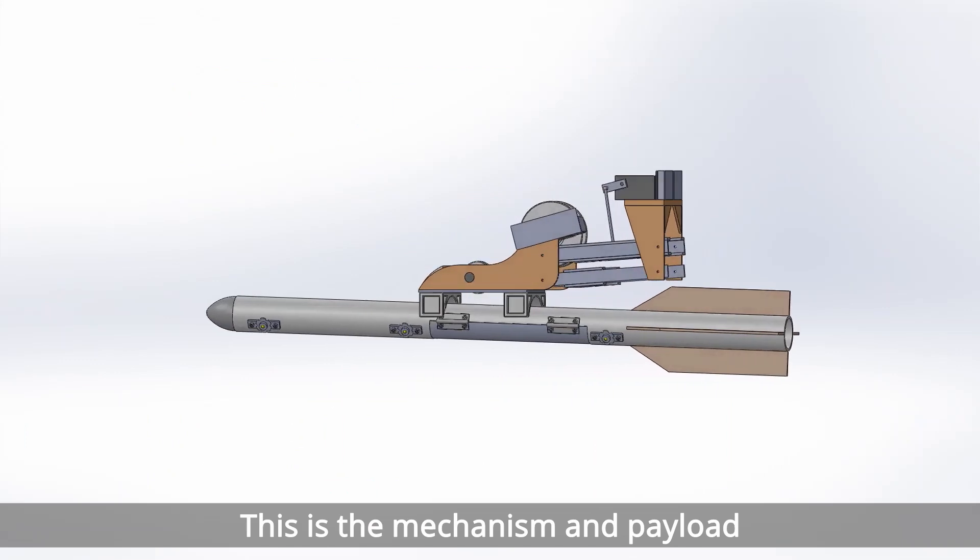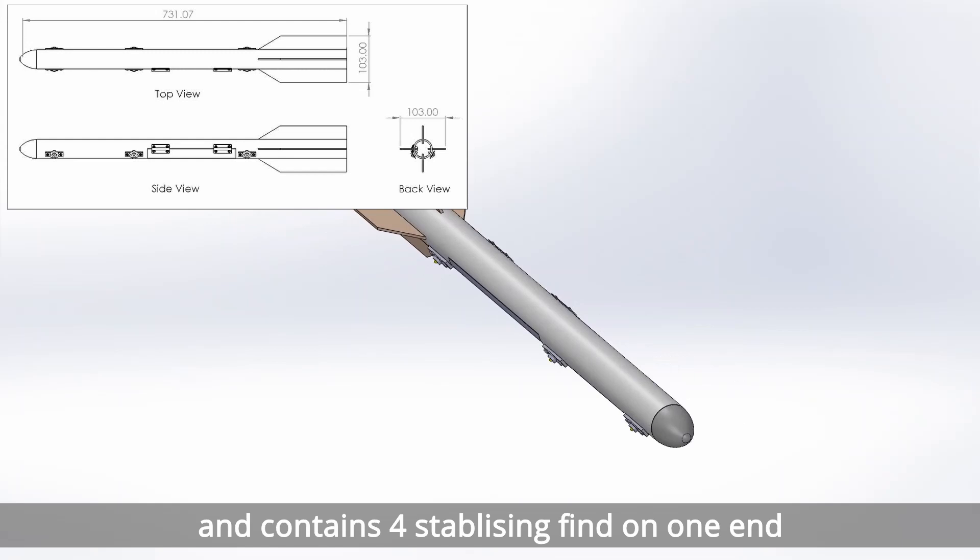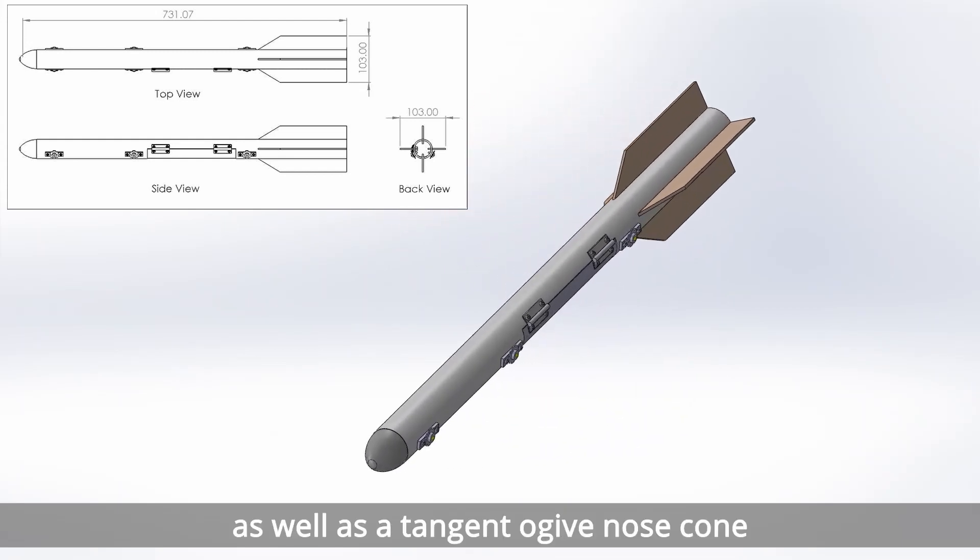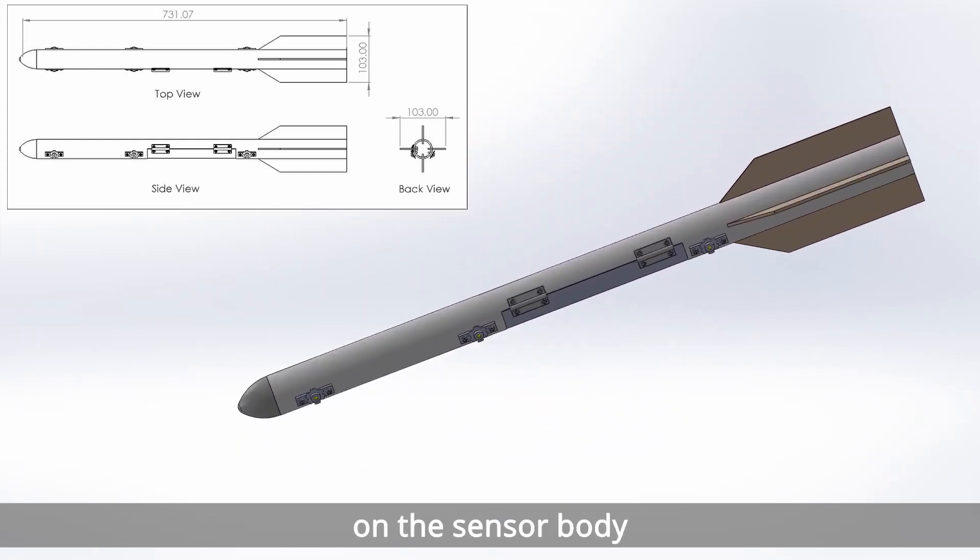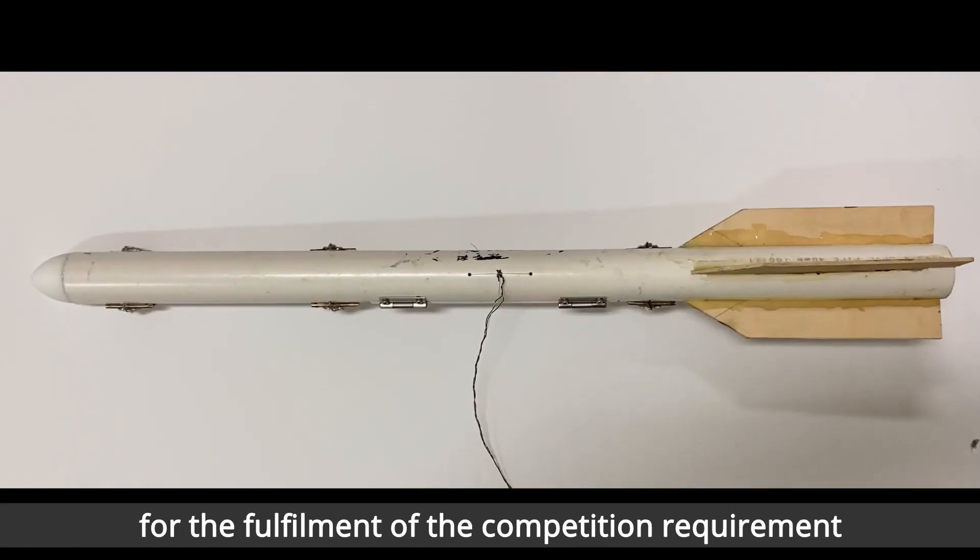This is the mechanism and payload to be installed in the aircraft. The toad sensor is cylindrical in shape and contains four stabilizing fins on one end, as well as the tangent ogive nose cone on the other. On the sensor body, there are three pairs of LEDs which will flash in the preset pattern in fulfillment of the competition requirements.